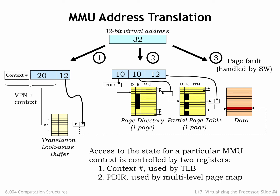Access to a particular mapping context is controlled by two registers. The context number register controls which mappings are accessible in the TLB, and the page directory register indicates which physical page holds the top tier of the hierarchical page map. We can switch to another context by simply reloading these two registers. To effectively accommodate multiple contexts, we'll need sufficient TLB capacity to simultaneously cache the most frequent mappings for all the processes.